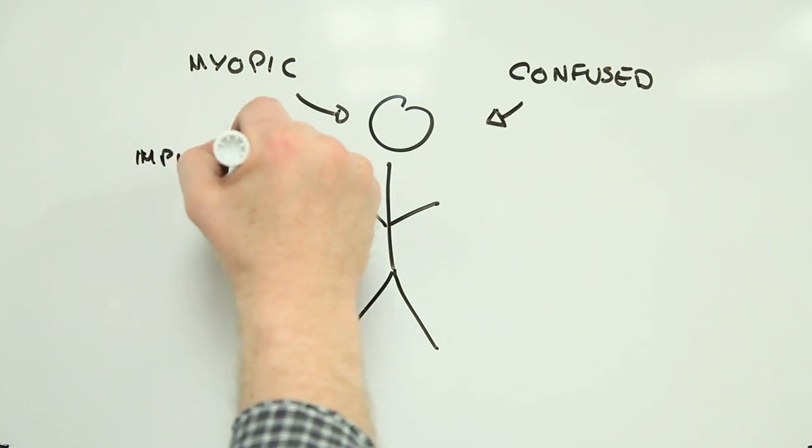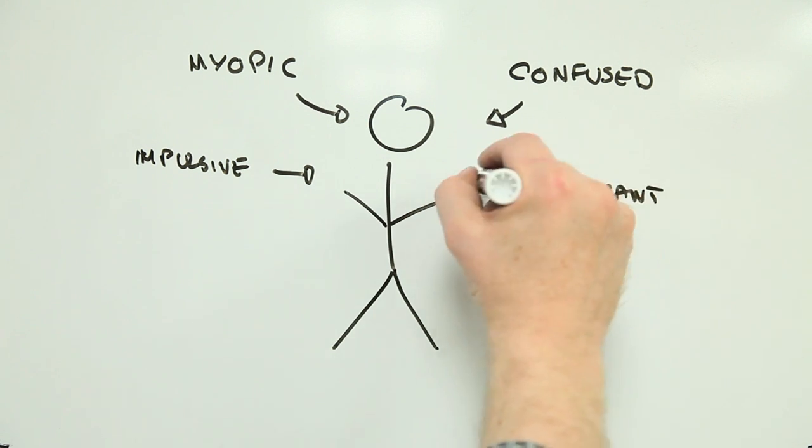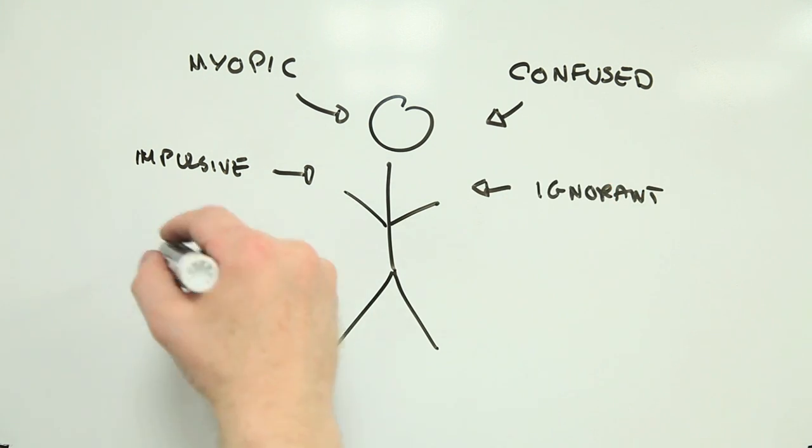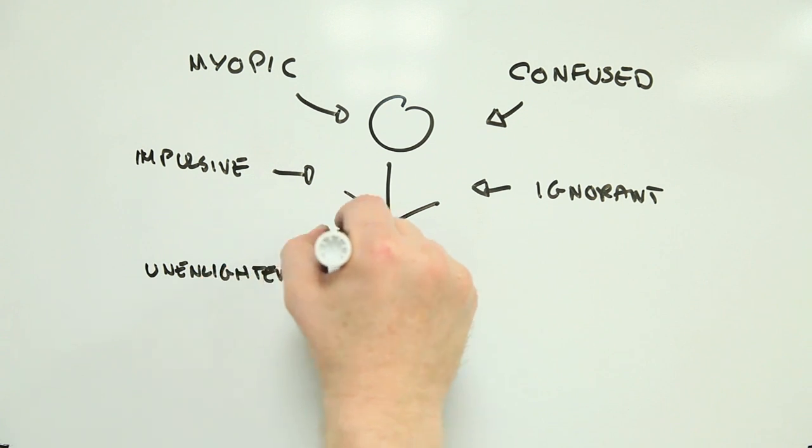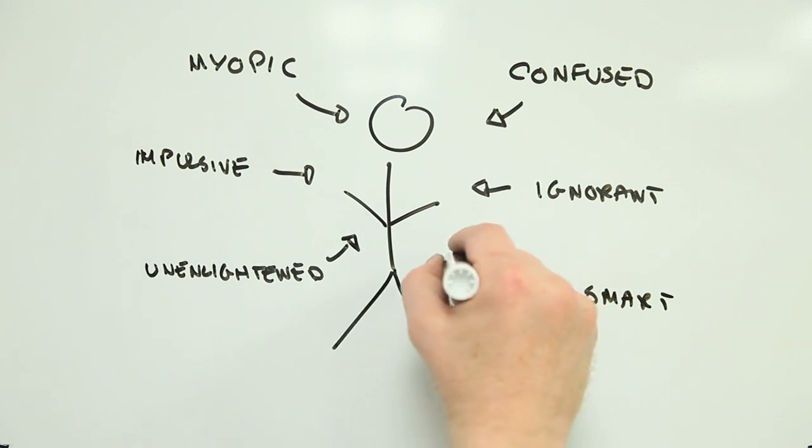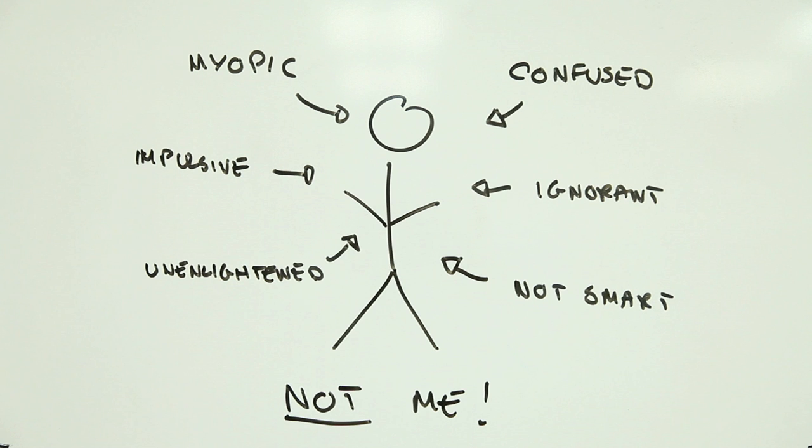They couldn't possibly understand the profound intricacies and interactions of the world in a way that allows them to make smart decisions. Surely these people, uninitiated in the great mysteries of life, need our help, not our ears.